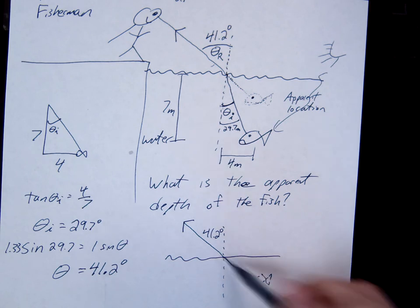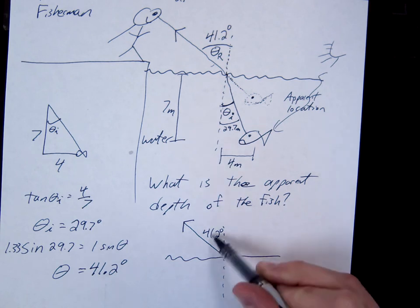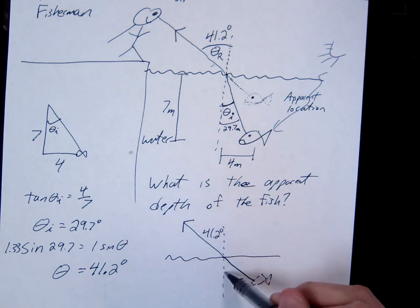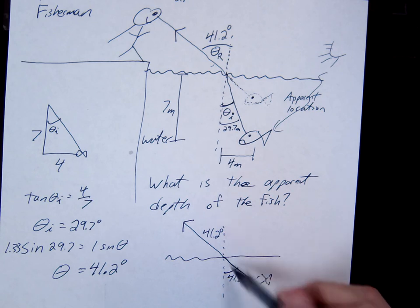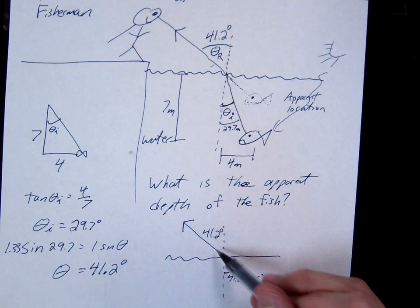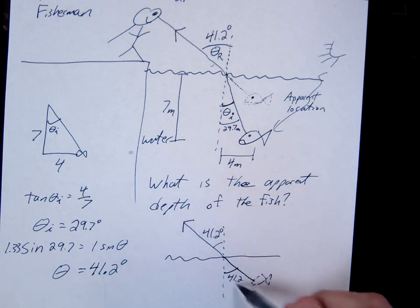So here's my apparent fish right here. Here's my line of sight. If this is 41.2, what is this angle? 41.2. Right? These are vertical angles. So these would be the same. So this 41.2 should be the same as this one, 41.2.